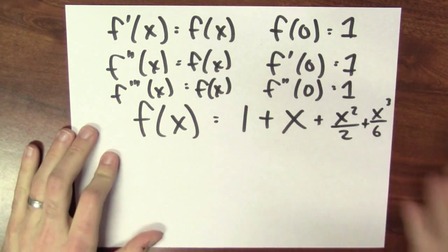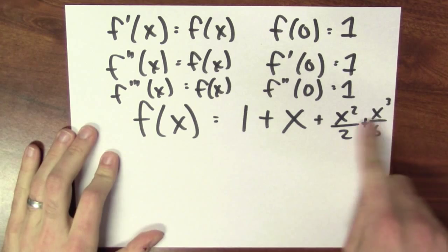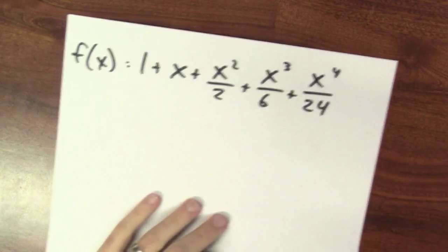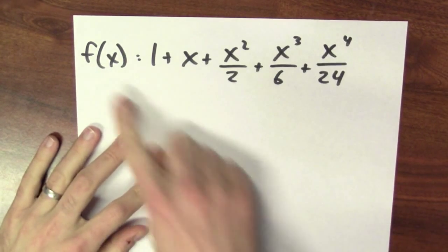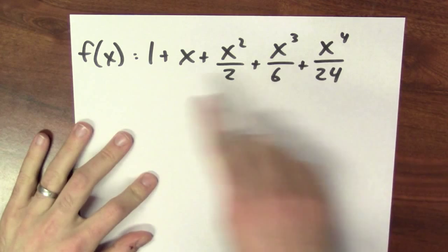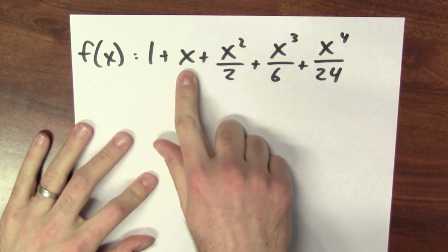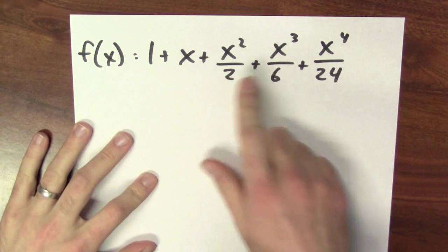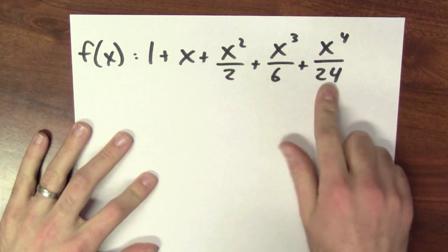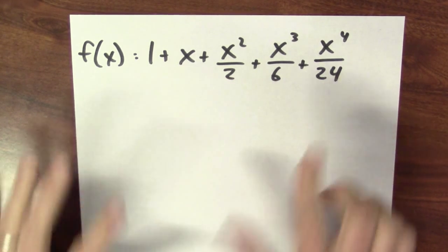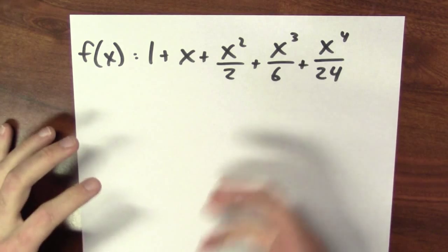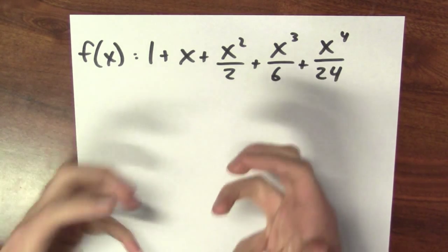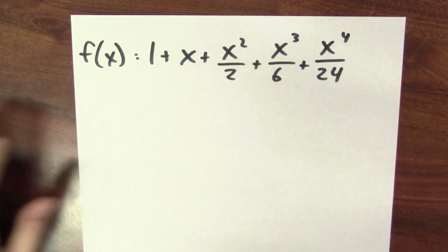The fourth derivative of f must also be f. I'm out of space here, but no worries — I'll just get more paper. Here I've written down a function whose value at 0 is 1, whose derivative at 0 is 1, whose second derivative at 0 is 1, whose third derivative at 0 is 1, whose fourth derivative at 0 is 1. And you can see this is building me closer and closer to a function which is its own derivative.